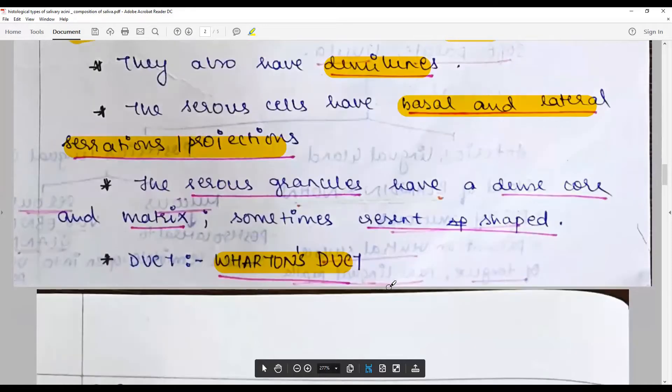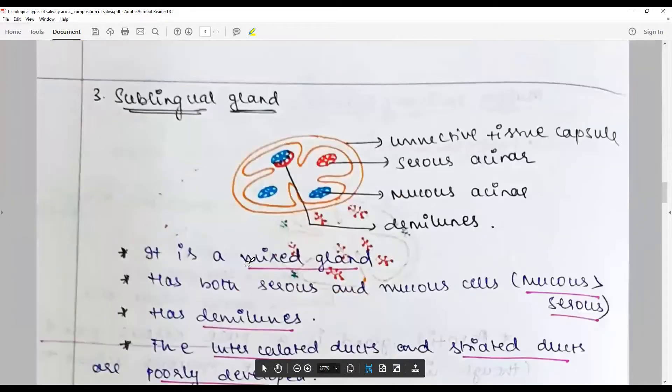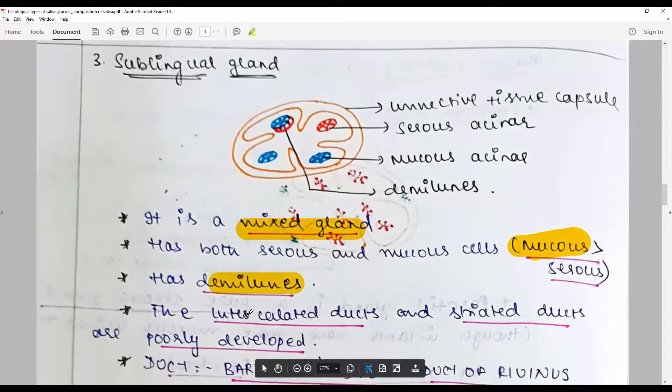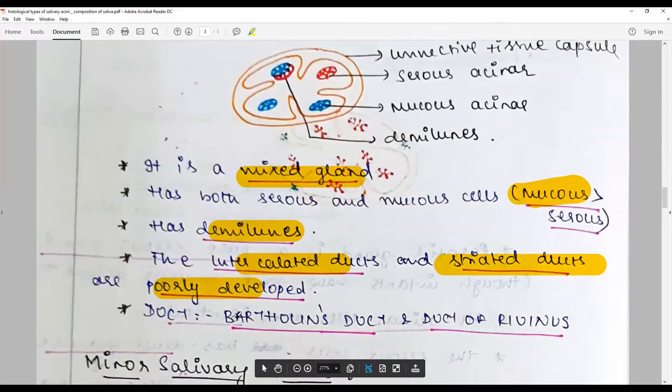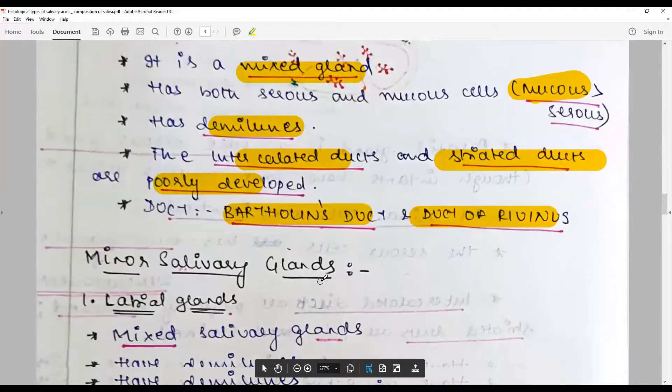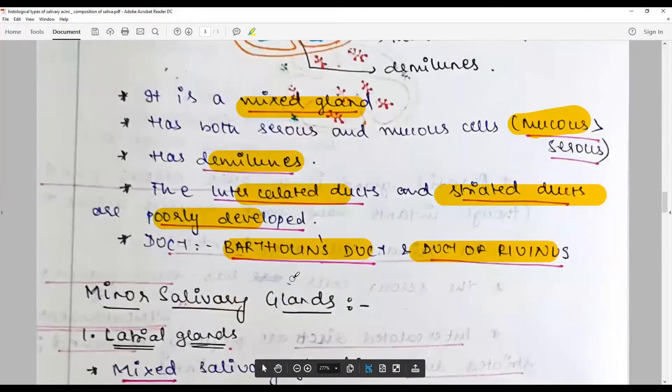Sublingual gland is a mixed gland with mucous predomination. Since it is mucous in nature, it has demilunes. They have intercalated ducts, and striated ducts are poorly developed. The ducts are called Bartholin's duct or duct of Rivinus.